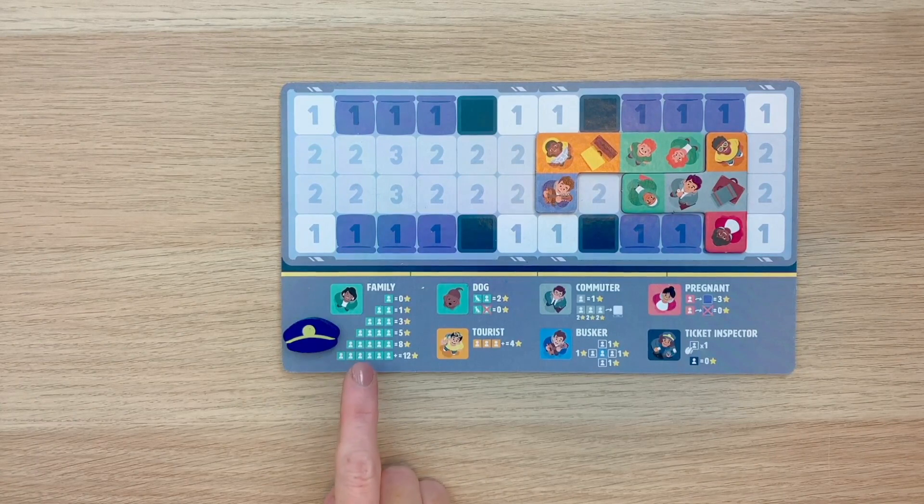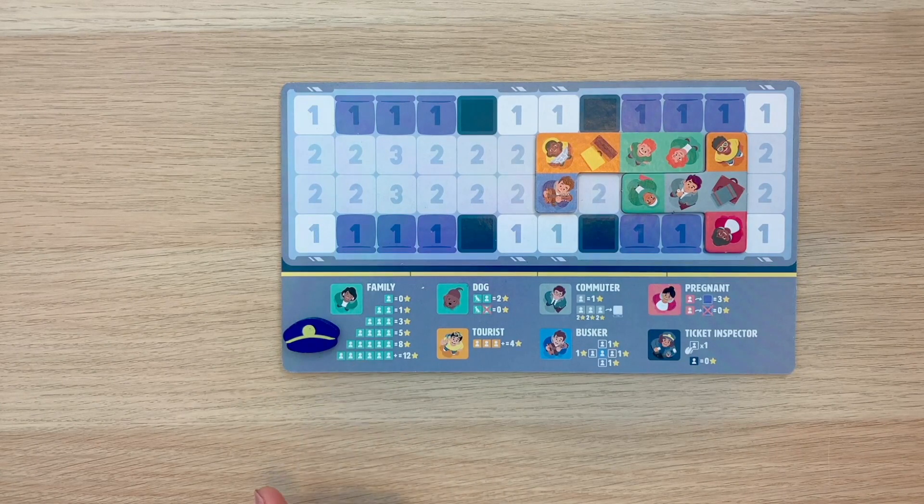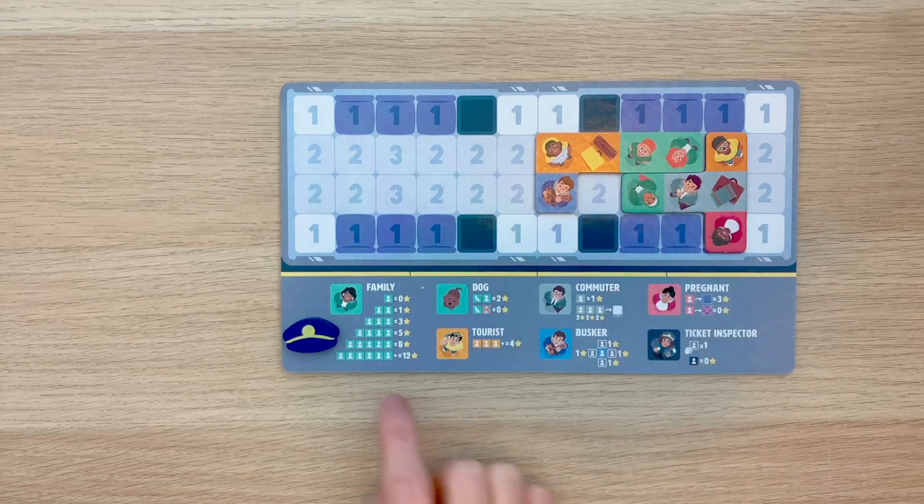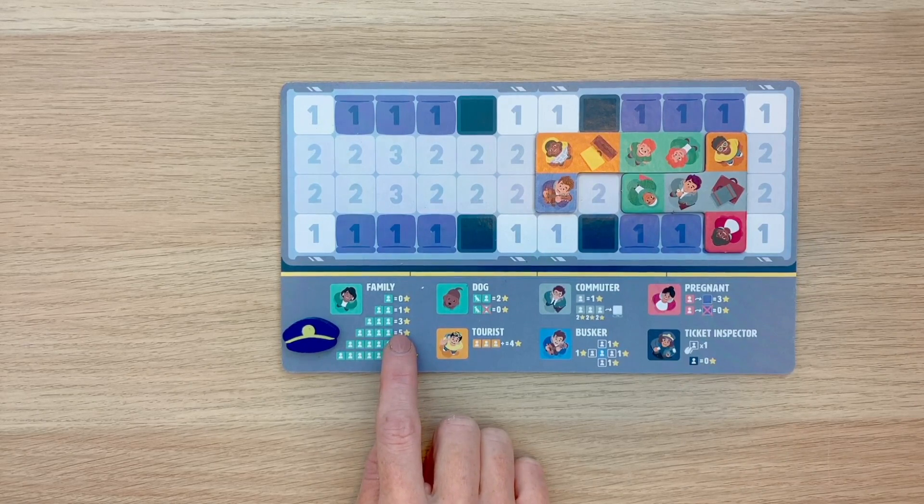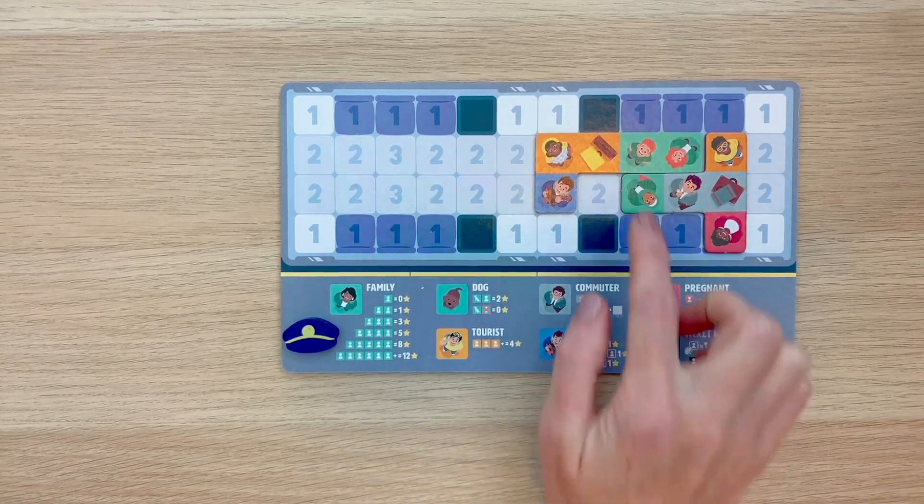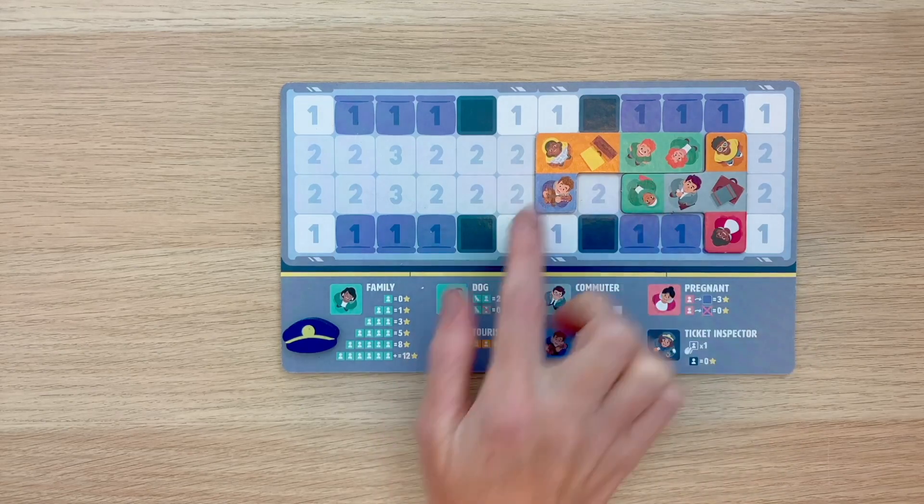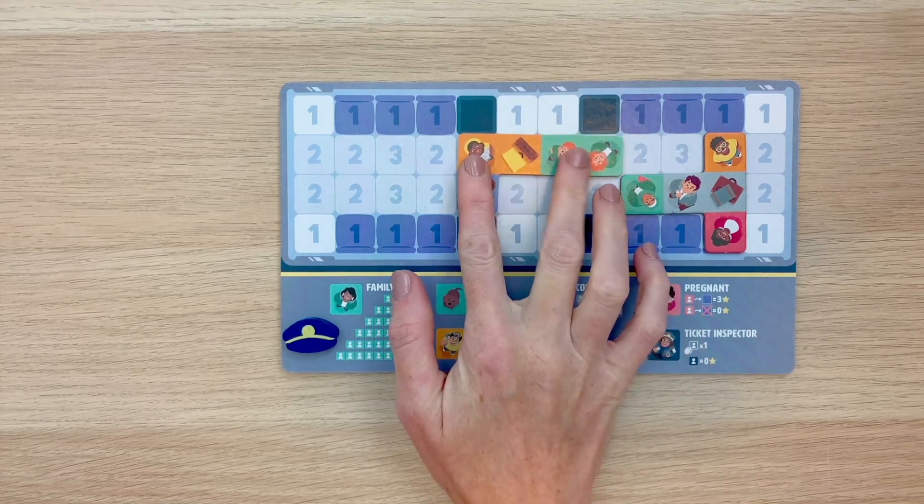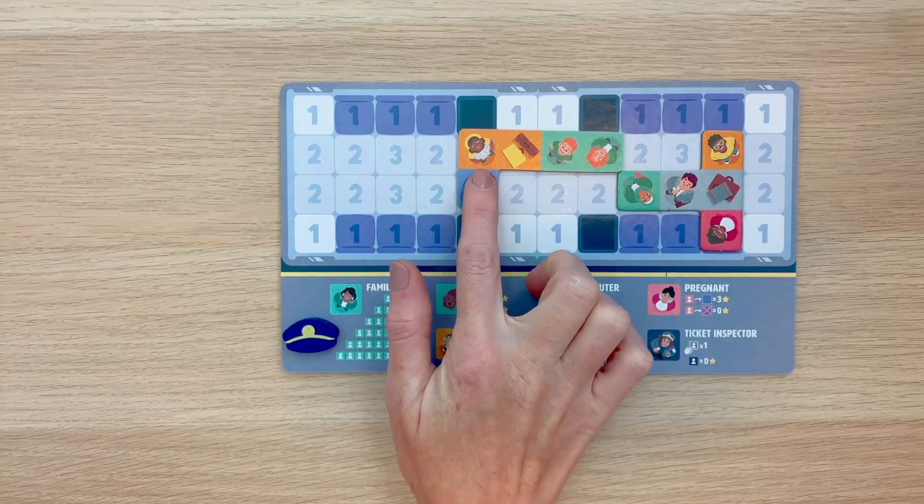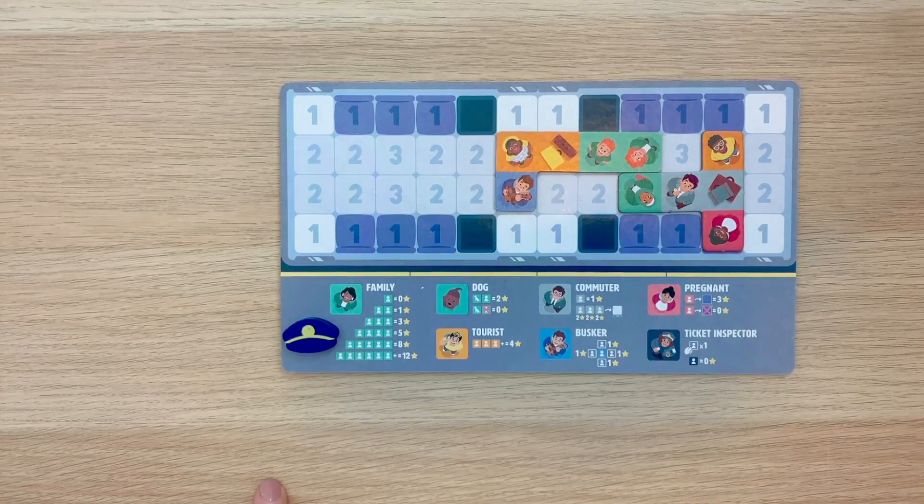First up, let's talk about a family. Families score points based on how many passengers are in each group. So for my example here, I have a family of three, and I can see that that awards me three points. When scoring like passengers or collections and groups, sides of the passengers need to be touching. So I wouldn't be able to place this here and count it as a family unit of three. But as long as their sides are touching, that will count.